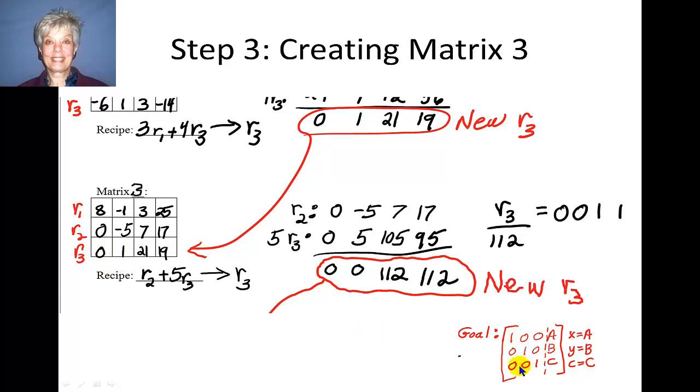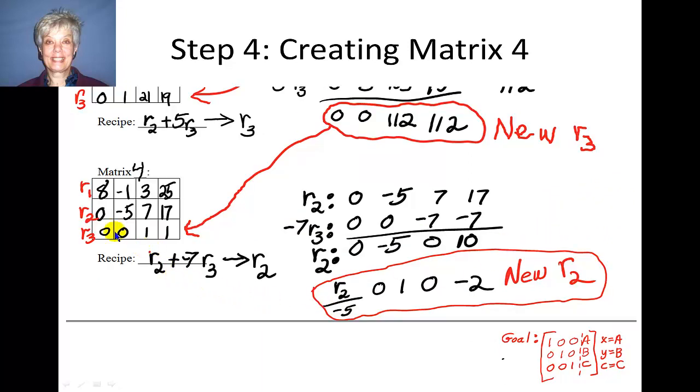Now, looking at my goal, I have to put a 0 where 1 is in row 3. To do this, I am going to add row 2 and 5 times row 3, and substitute the result in row 3, so that I have a 0 in this position. Here's row 2. Here's 5 times row 3. When I add them together, I get 0, 0, 112, 112. Now, I realize that I can divide every position in the new row 3 by 112, and that will give me 0, 0, 1, 1. This now will become my new row 3, and I place it in row 3.